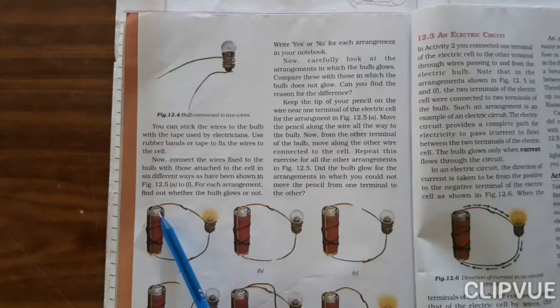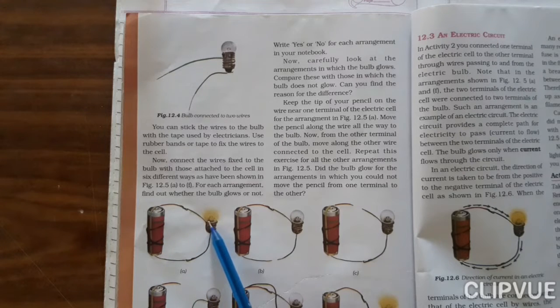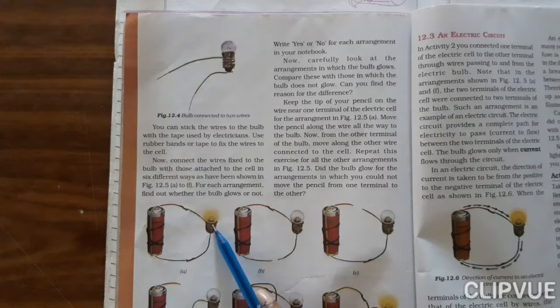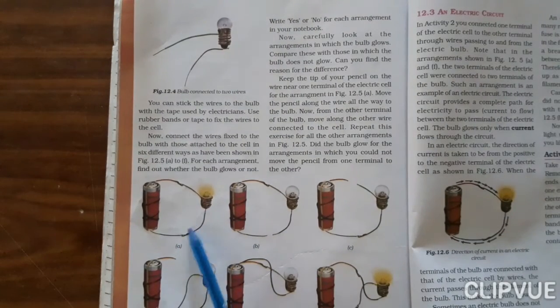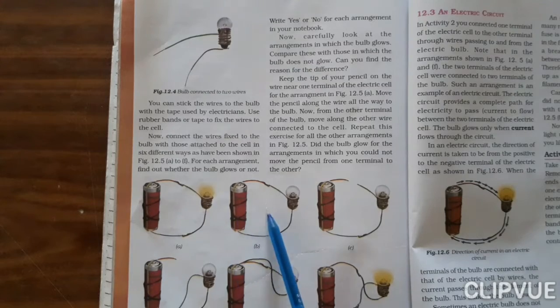This circuit should be completed this way, and then and then only this bulb will glow. Now they have given us different situations here. In the first electric circuit, the circuit is complete, that is why the bulb is glowing.